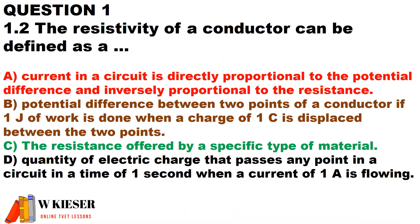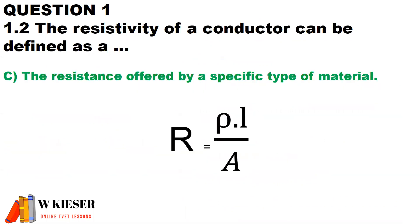Now in question 1.2, we are given a statement and we need to match the sentence to the statement. The resistivity of a conductor can be defined as the resistance offered by a specific type of material.